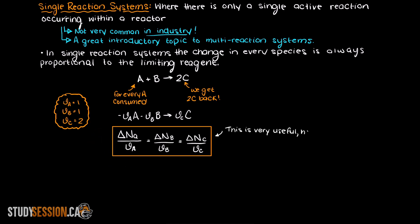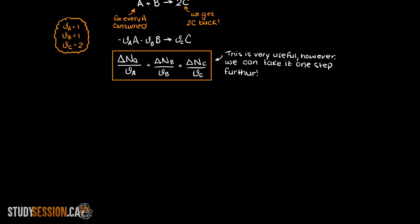This is a great relationship and is extremely useful. However, we can take this one step further by creating the relationship we talked about earlier. Let's create a relationship between our limiting reactant and all of the species in our reaction. This will allow us to determine the change in moles in all of the components of our reaction with minimal information.